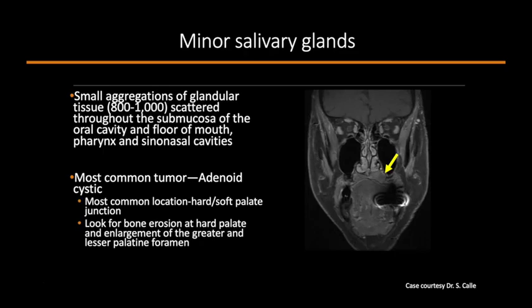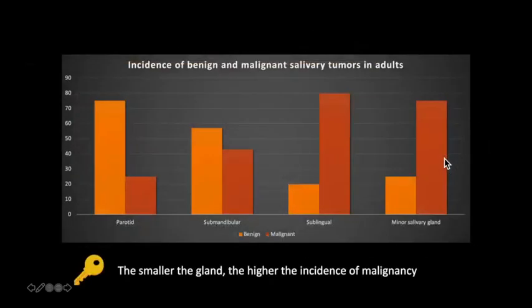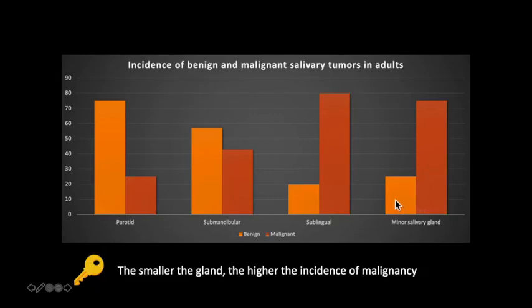Sometimes adenoid cystic carcinomas enhance poorly, and the only clue of a mass may be asymmetry — they're easy to overlook and may not present until there's clinical evidence of perineural spread. On CT, look for bone erosion or enlargement of the greater or lesser palatine foramen. In adults, the smaller the salivary gland, the higher the risk of malignancy. In the parotid, roughly 75–80% of tumors are benign; this drops to about 60% benign in the submandibular gland. The majority of tumors in sublingual and minor salivary glands are malignant — masses arising in these locations should be presumed malignant until there is pathologic evidence otherwise.